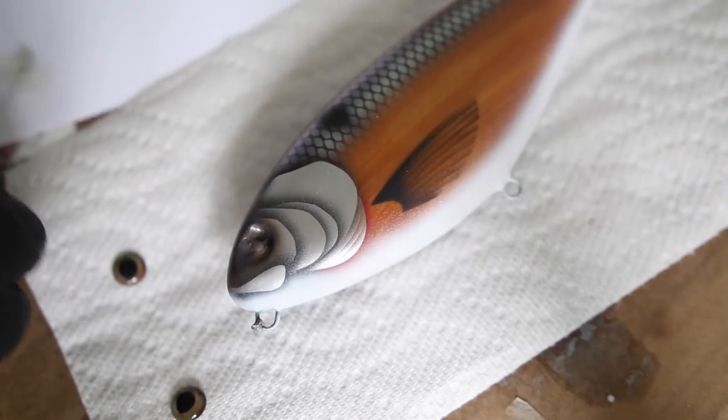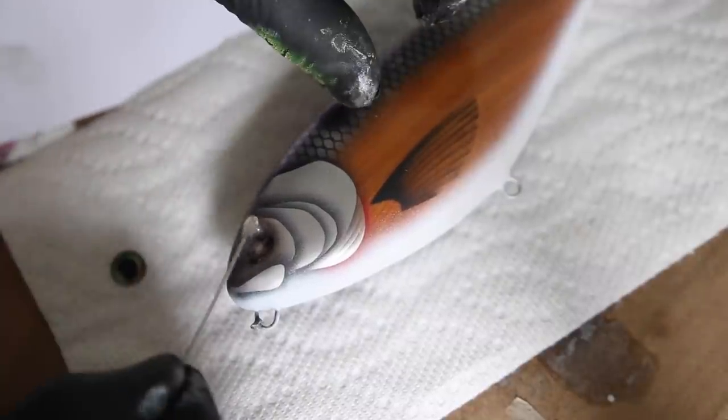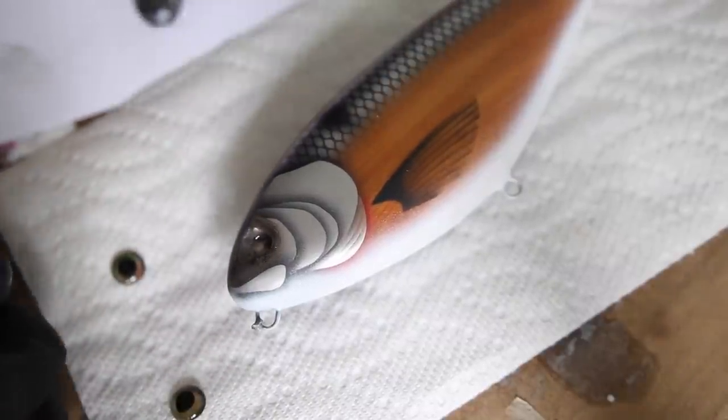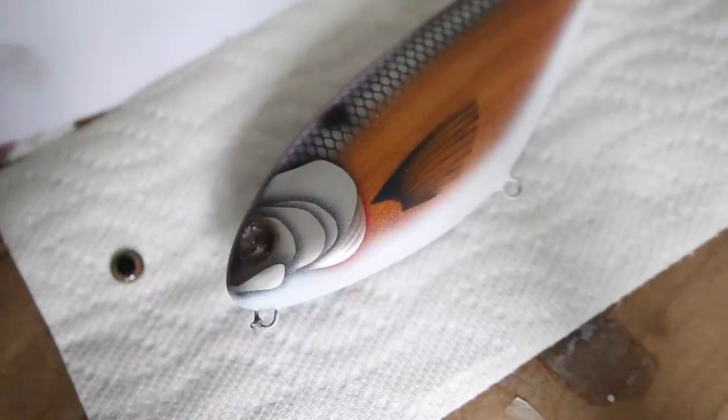There is only one last thing I need to do before I can start epoxying this thing, and that is to add the eyes. I'm just going to fill up the eye sockets with a 5-minute epoxy and glue in the eyes.